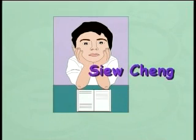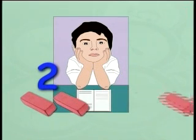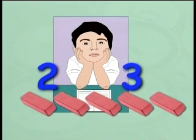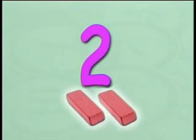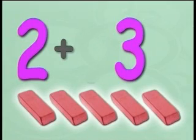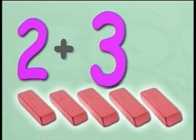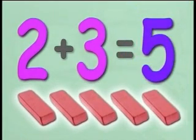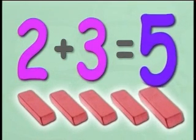Siu Ching has two erasers. His brother gives him three more erasers. What is the total number of erasers Siu Ching has? If Siu Ching has two erasers and his brother gives him three more, that means we add two to three, which is a total of five. Siu Ching has a total of five erasers.